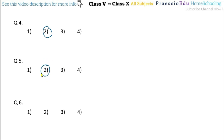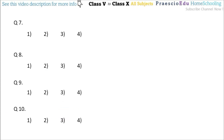Question number 6: What is the shape of the face of a cube? A cube has square faces or surfaces. That is why it is called a cube; otherwise it would be a cuboid. So square means option number 3 is the correct one for question number 6.